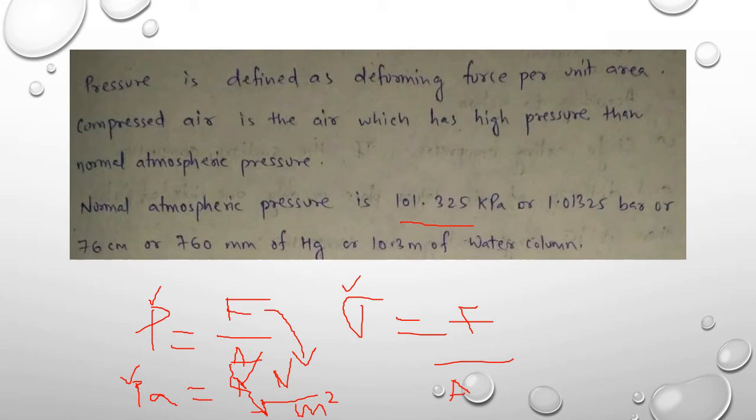Hence the pressure will have the unit as Pascal, but we must have different units as kilopascal and bar. One kilopascal equals 10 to the power 3 Pascal or 1000 Pascals. Now one bar is 10 to the power 5 Pascal.